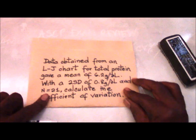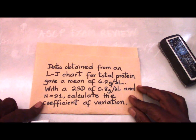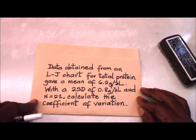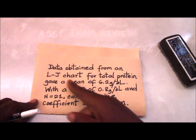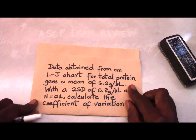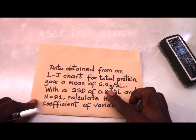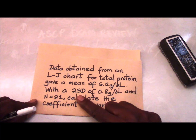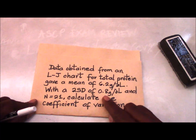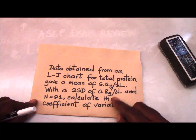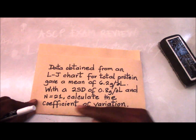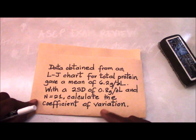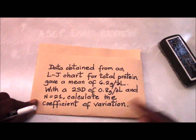Here is the equation that borders on CV. The data obtained from a Levey-Jennings chart for total protein gave a mean of 6.2 grams per deciliter, with a 2 standard deviation of 0.8 grams per dL, and N equals 21. Calculate the coefficient of variation.